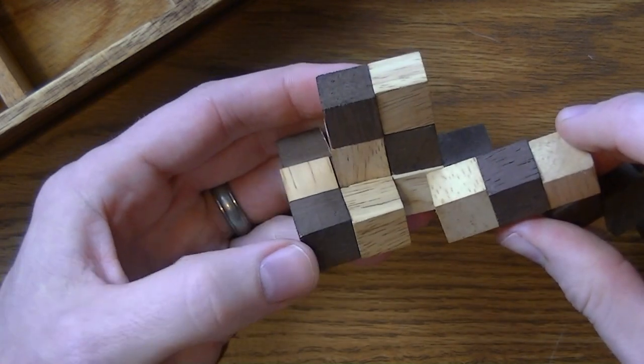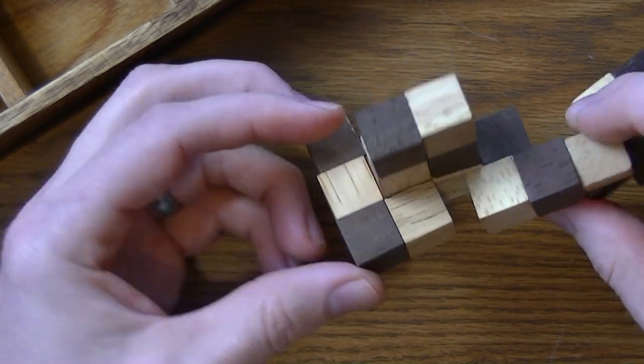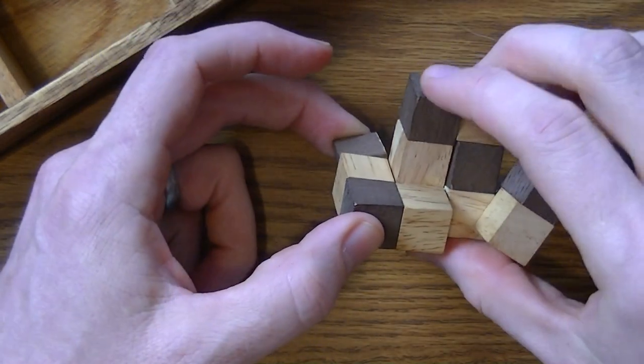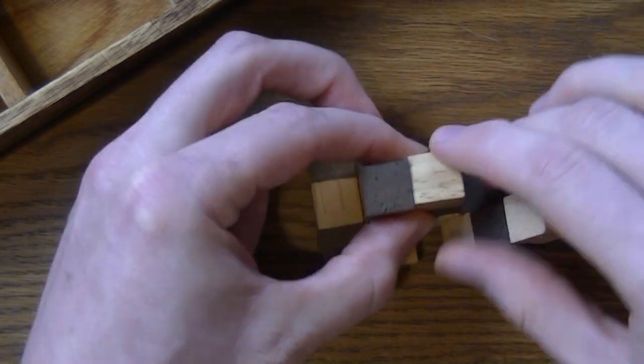And so from this point on, all we're basically going to do is take what's left of this and just wrap it around these two upright pieces.